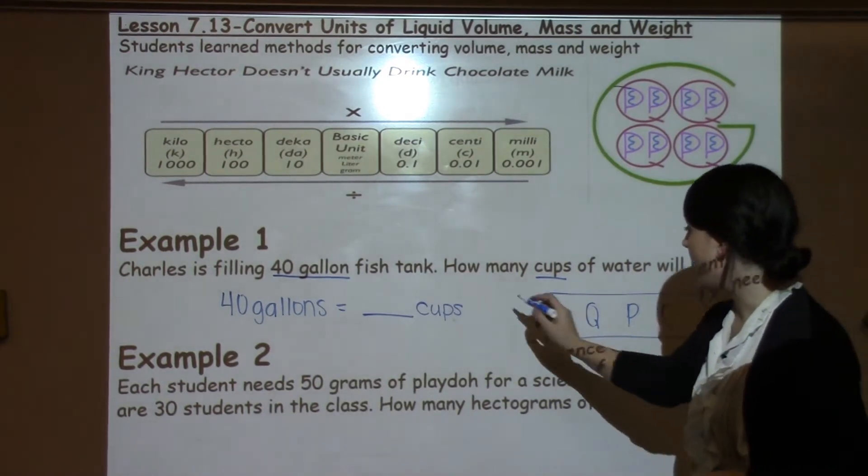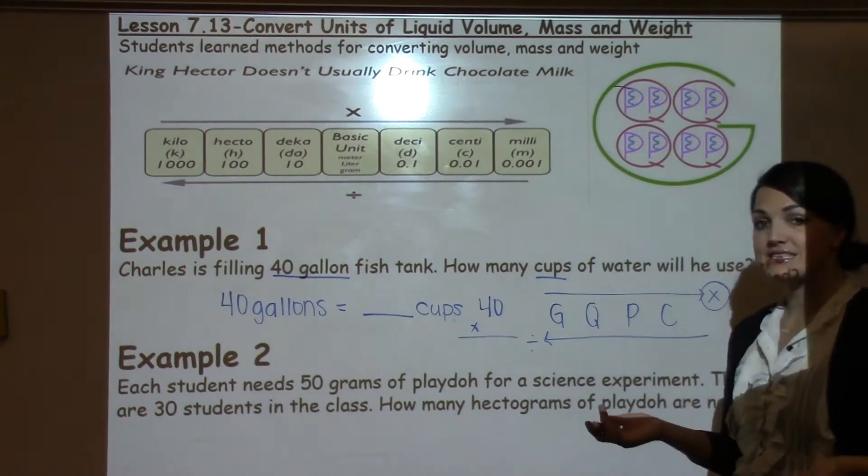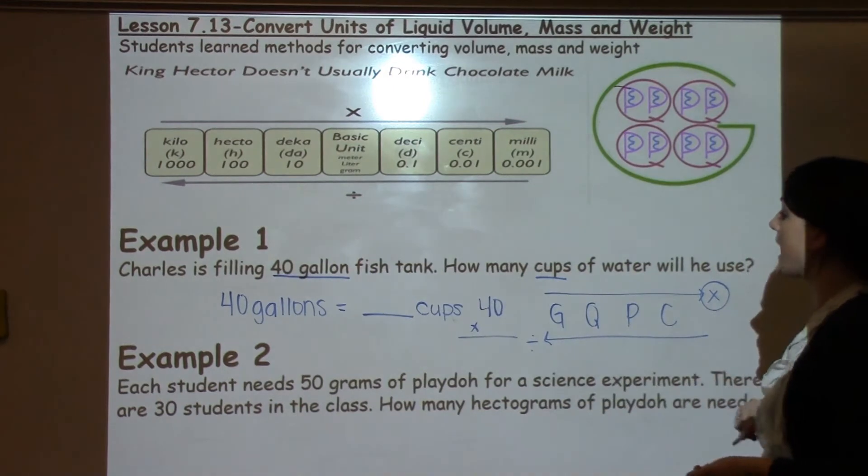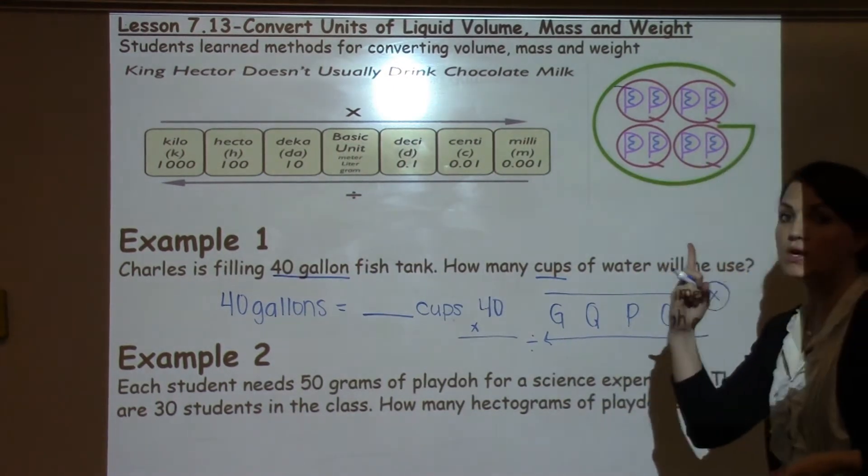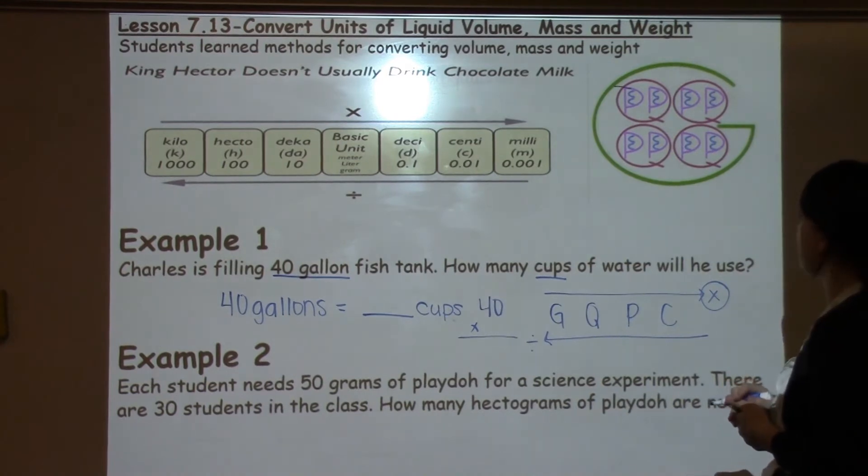So we are going to multiply 40 times something. The something part comes in with the big G. If I'm working with gallons and cups, I have to figure out how many cups are in one gallon, and that will help me know what to multiply my 40 gallons by.